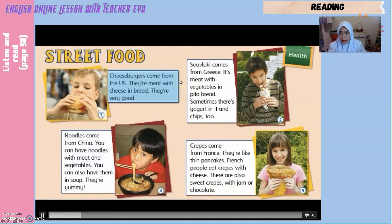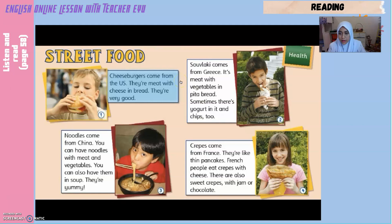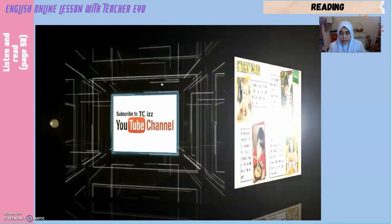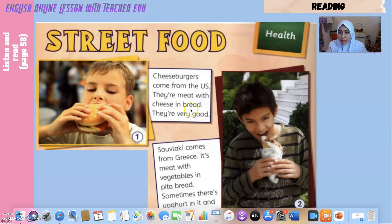Street food: Cheeseburgers come from the US. They're meat with cheese in bread. They're very good. Souvlaki comes from Greece. It's meat with vegetables in pita bread. Sometimes there's yogurt in it, and chips too. Noodles come from China. You can have noodles with meat and vegetables. You can also have them in soup. They're yummy. Crepes come from France. They're like thin pancakes. French people eat crepes with cheese. There are also sweet crepes with jam or chocolate.